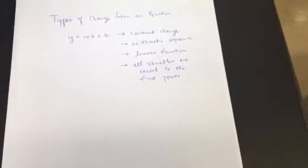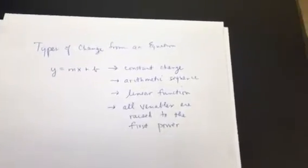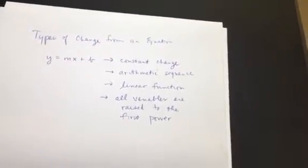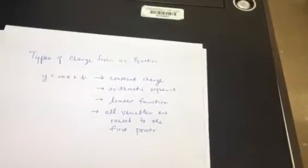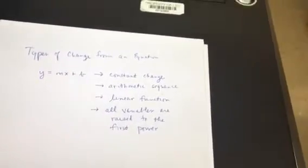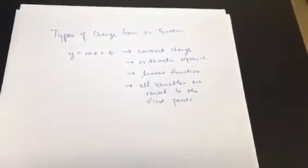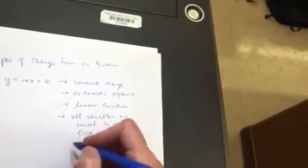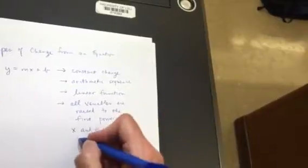M and b are holding the place of constants in this problem. Usually, letters near the end of the alphabet are considered variables. Letters toward the beginning, like in a calculus class, would be considered constants. In this problem, m is holding the place of the slope, which is the change, which would be constant. So when I wrote all variables are raised to the first power, maybe what I should have said is x and y are raised to the first power.